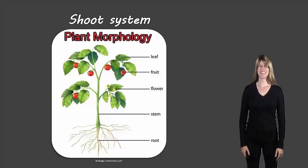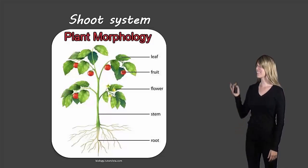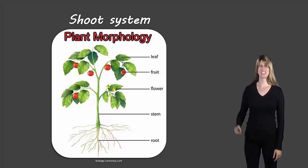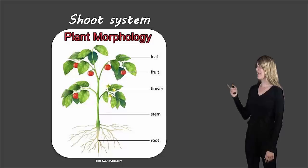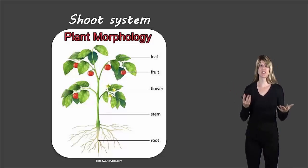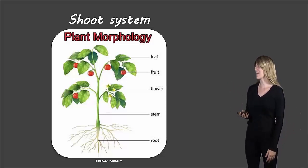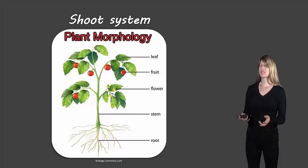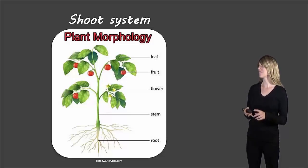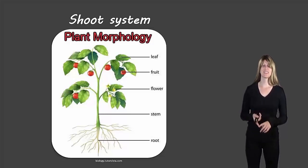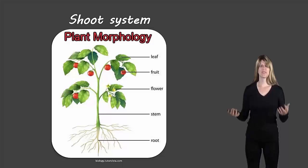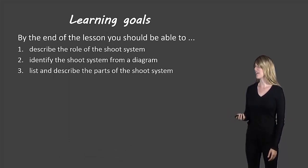Hello students, Ms. Swanson here, and today we're taking a look at the shoot system of plants. I chose this picture here just because it shows the basic morphology of a plant, specifically in the shoot system — the leaves, the fruit, the flower, and the stem. So let's look at the shoot system; those are the main areas of the plant that we'll be looking at today.